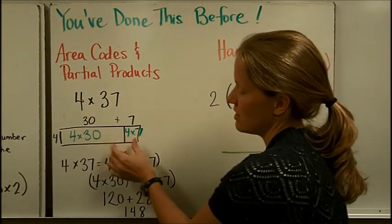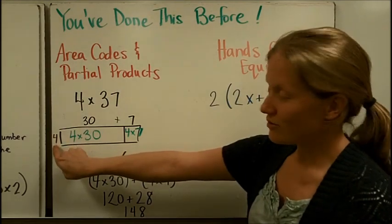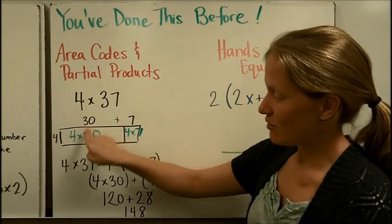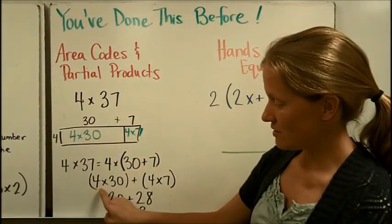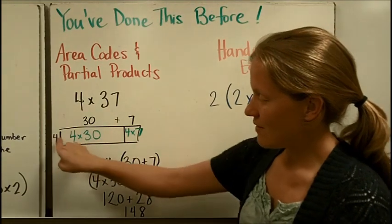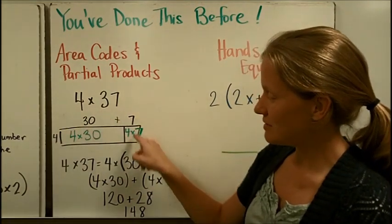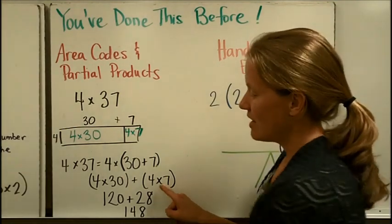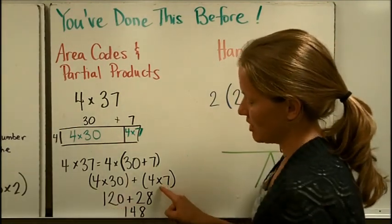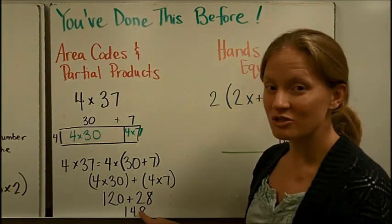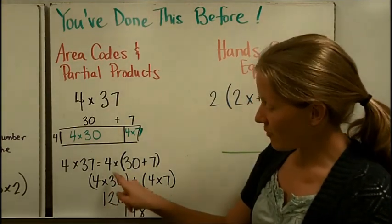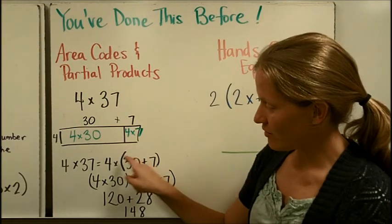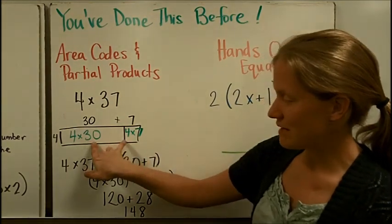And then, so here it is. I had the four and broke it into 30 plus 7. Here's the group of 30. Here's the group of 7. And then I multiplied or distributed the 4 times the 30 here. Here it is too. 4 times 30. And then I distributed the 4 times the 7. Here it is here. 4 times 7. Then I did the multiplication problem here and added them up. So I'm actually using the distributive property when I take this form, multiply it by the 30 and multiply it by the 7.